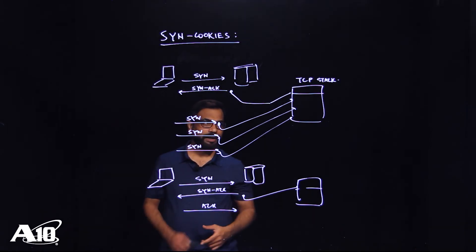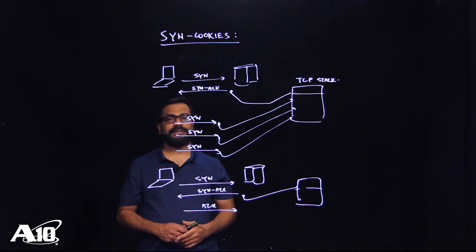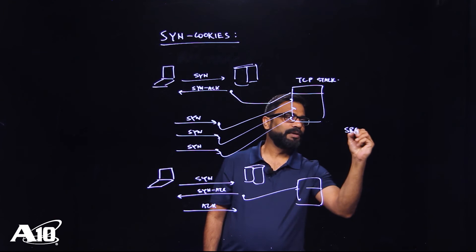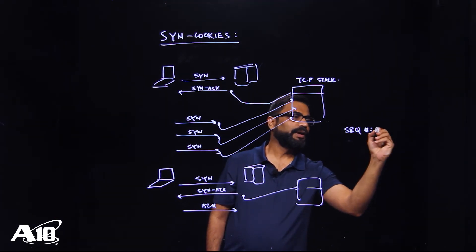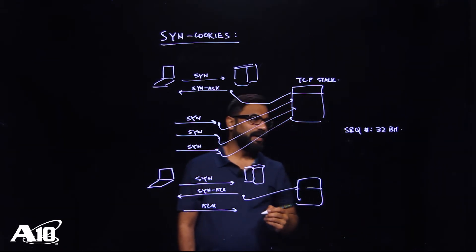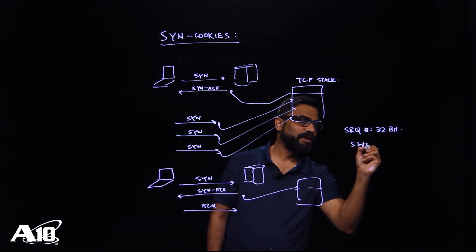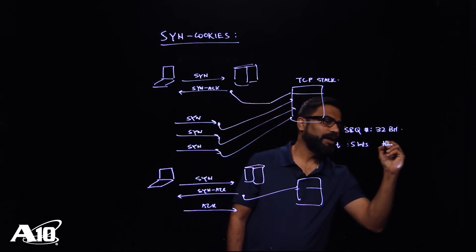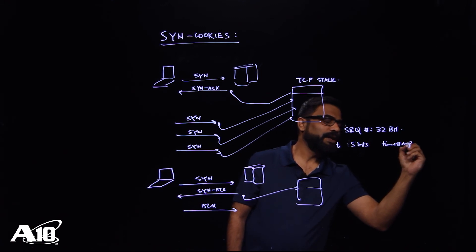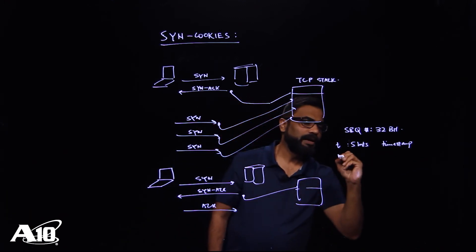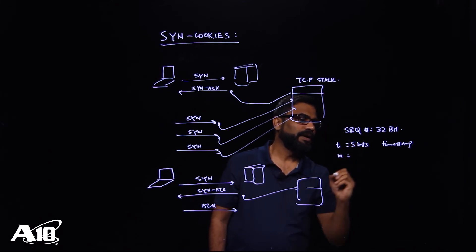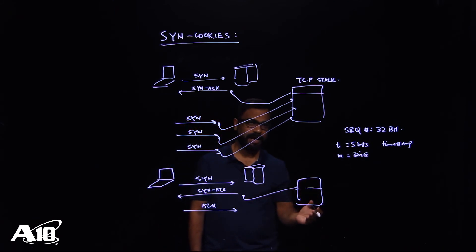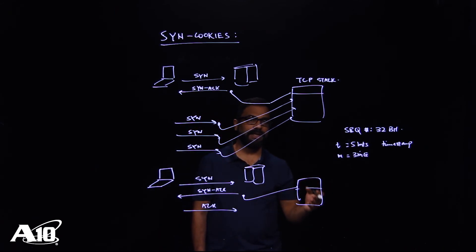One thing I would like to highlight here is how the SYN cookie computation actually works. As we all know, the sequence number is a 32-bit value. So the way it works is the first five bits are used for a slowly incrementing timestamp. The next three bits are actually used for the MSS value that the server may have used in the SYN-ACK and perhaps stored in the TCP SYN queue entry.